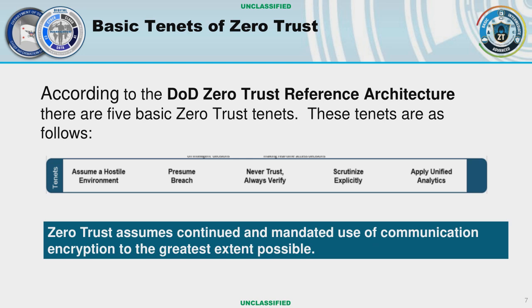If you look at the reference architecture, the tenets are explained clearly: assume a hostile environment, presume breach, never trust always verify, scrutinize explicitly, and apply unified analytics. Remember back to that quote from Sneakers — it's all about the data. And because it's all about the data, encryption is not optional. It's mandatory.